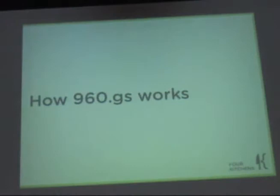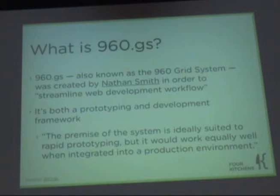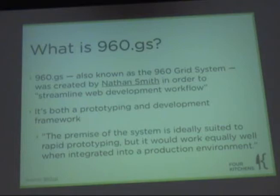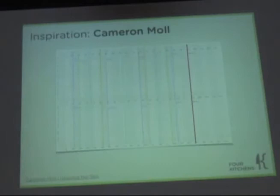How 960.gs works — it was invented by Nathan Smith, and the premise is it's ideally suited to rapid prototyping. When Jun Park, who did the 960 Drupal theme, approached me, he asked what I was going to do for right-to-left languages and for content-first so he could switch the visual layout but not the source order. I started it for prototyping and it kind of grew into production-ready. I don't purport to have any original thoughts. Inspiration came from Khoi Vinh, the design director of the New York Times, and Cameron Moll, who wrote an article called 'Gridding the 960' showing that 960 was a highly divisible number and a great base number to work with.